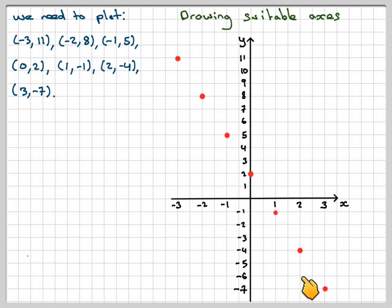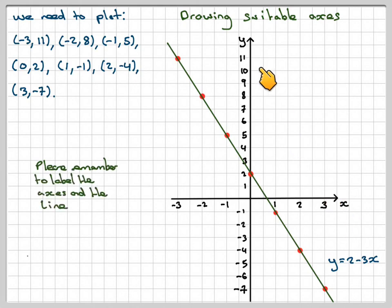Now, if you've done the whole thing correctly, all these points here should be in a straight line. You take your ruler, place it against these points, draw in a straight line, and then at one end, label it y equals 2 minus 3x. Remember to label your axis and to label the line. So this has been another question to show you how to draw the equation of a straight line using a table method. I hope you've understood and thank you very much for watching.